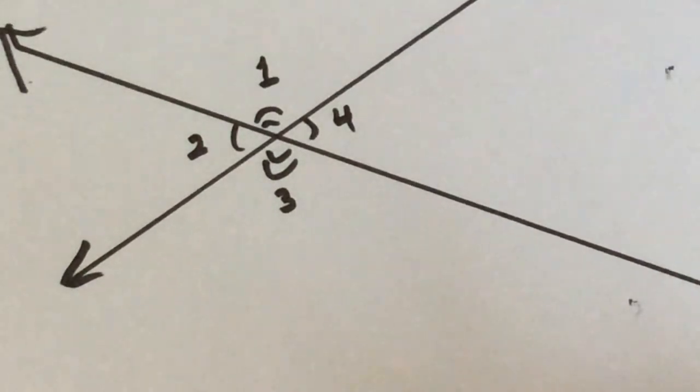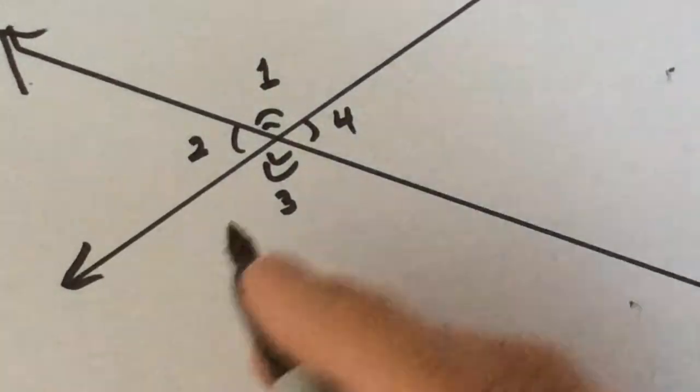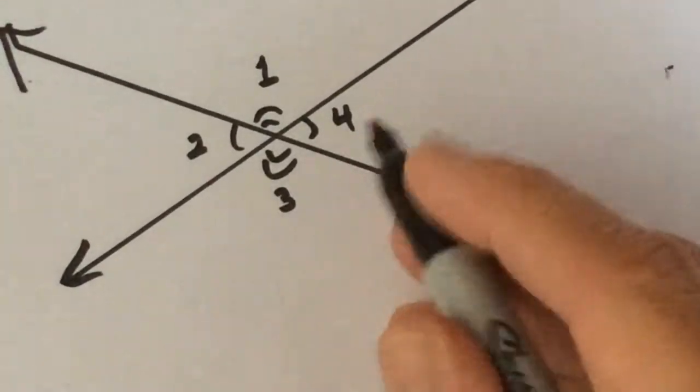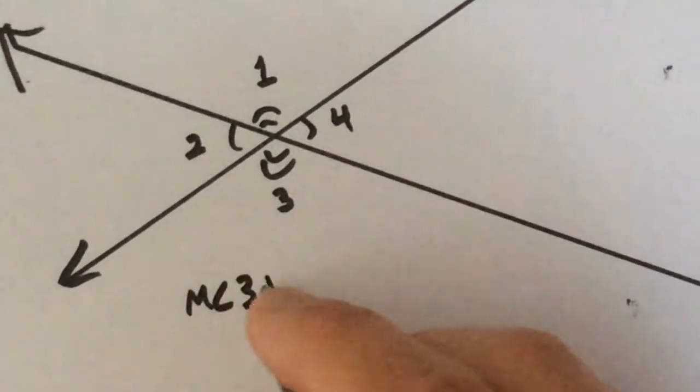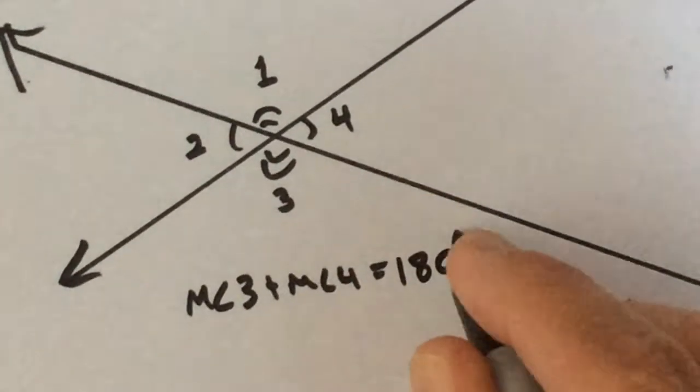What do I know? They're linear pairs. Which ones? Just name one. Four and three. Okay. Four and three are a linear pair, which means the measure of angle three plus the measure of angle four is equal to 180 degrees, right? Cool.